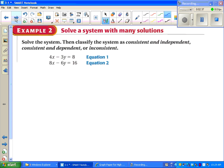So we're going to solve this system by graphing and then label them as consistent and independent, which means one solution. Consistent and dependent, which means many solutions. Or inconsistent, which means no solutions, or in other words, parallel lines.